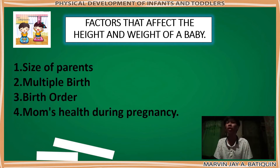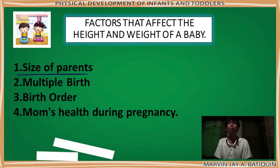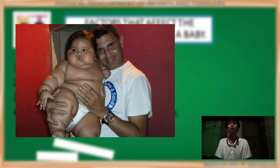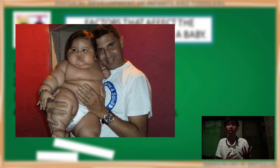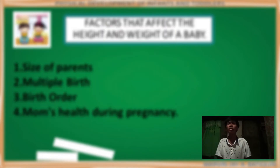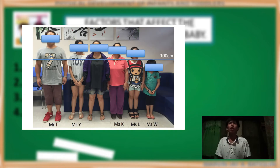Factors that affect the height and weight of the baby. First is the size of the parents. If the parents of the baby are tall and big, there is a possibility that the newborn baby can adopt their parents' traits. On the other hand, if the parents are short and fit, the newborn baby will also look like their parents.